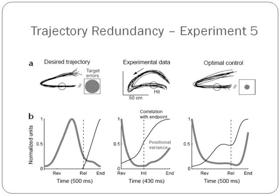The final trajectory redundancy experiment was a throwing experiment. This experiment was simulated in the optimal control model, the desired trajectory model, and tested in experimental data from human subjects. The target errors in the desired trajectory model were much higher than the experimental subject data and the optimal control data, due to the high constraint that the desired trajectory model places on the simulation. However, the optimal control model, which places emphasis on the endpoint trajectory rather than the entire trajectory, had much lower target error, and showed much greater correlation with the experimental data.